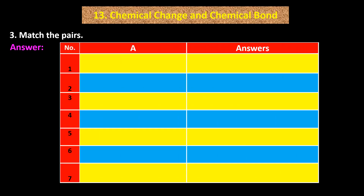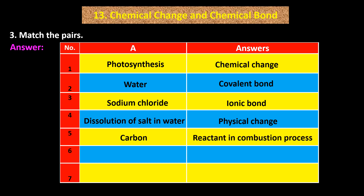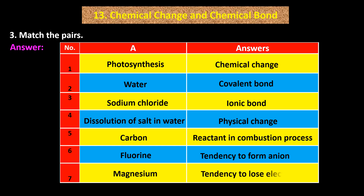Answer: 1. Photosynthesis — Chemical Change. 2. Water — Covalent Bond. 3. Sodium Chloride — Ionic Bond. 4. Dissolution of Salt in Water — Physical Change. 5. Carbon — Reactant in Combustion Process. 6. Fluorine — Tendency to form Anion. 7. Magnesium — Tendency to lose electrons.